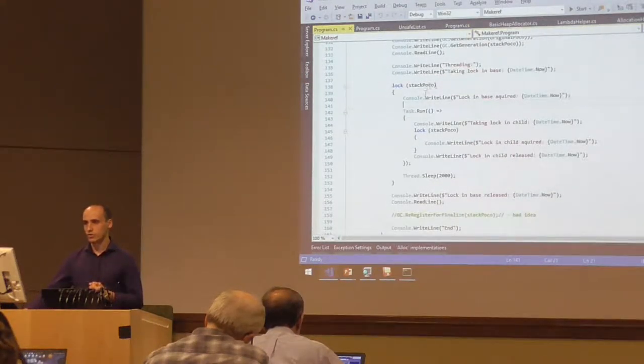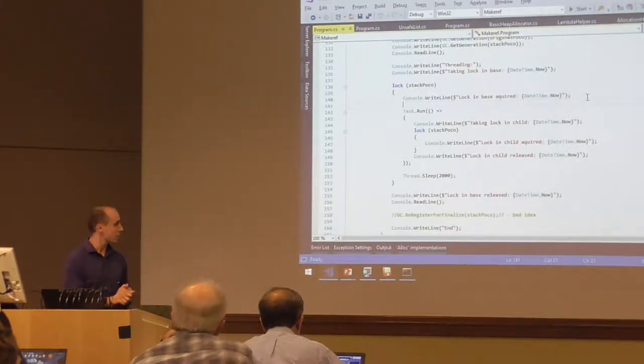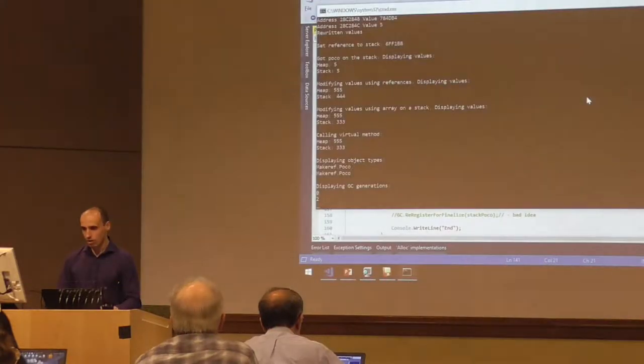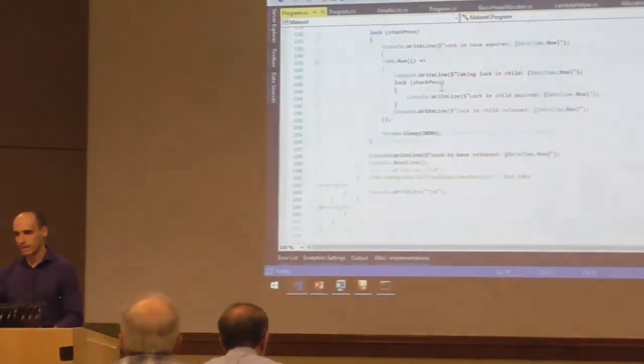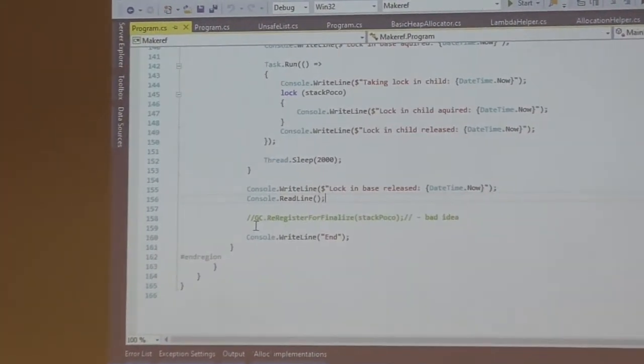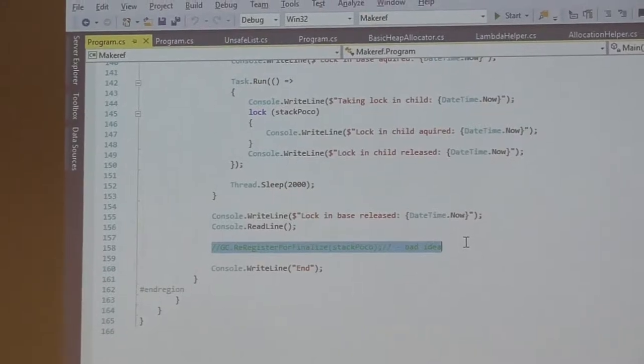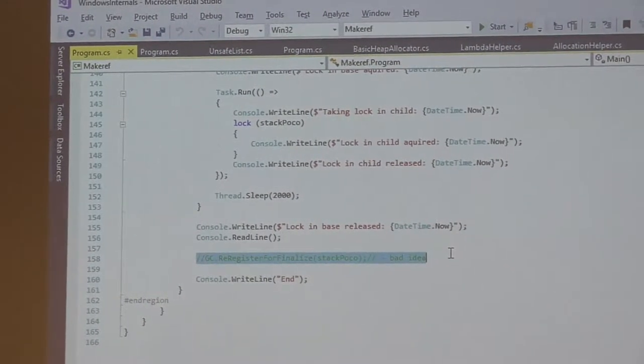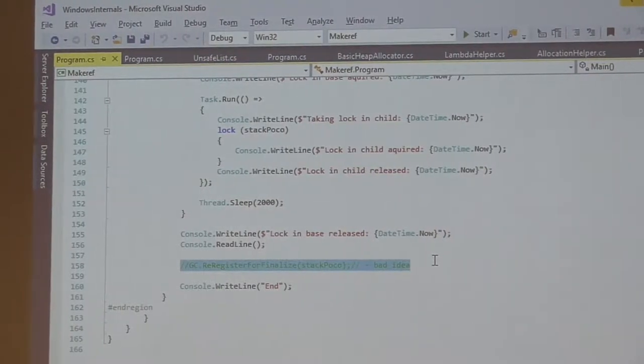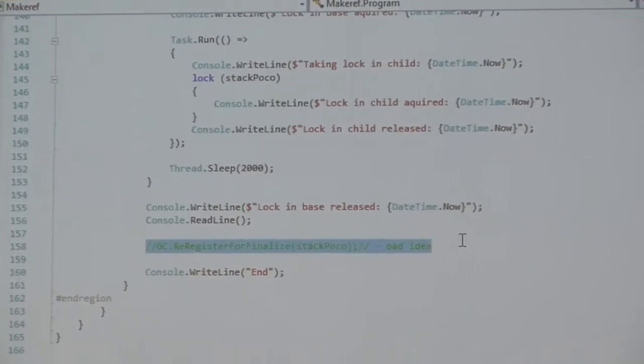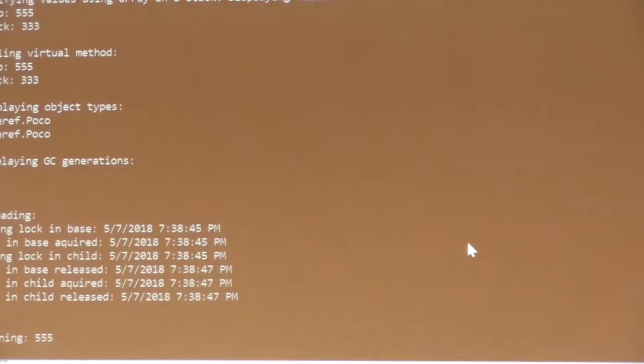Finally, what we are going to do is we want to take locks on this object. So we can see that yes, we are taking locks, acquiring them, releasing as expected. And finally, one thing which we are not doing, we can register our object on the stack for finalization so it's released by the garbage collector.